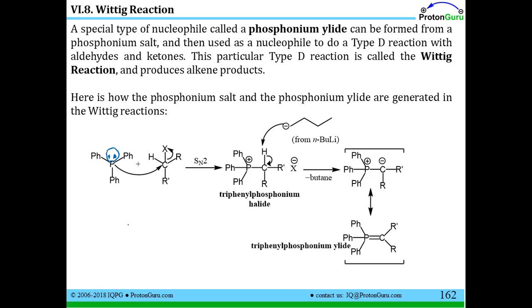The first step then is to take an alkyl halide where this X group could be a chlorine or bromine or iodine. You do a simple SN2 reaction. Now when a neutral phosphorus donates its lone pair, it of course becomes positive. And the name for a positively charged phosphorus with four bonds to it is a phosphonium, kind of like an ammonium is a nitrogen with four bonds with a plus charge.